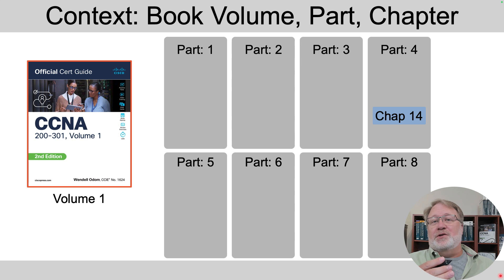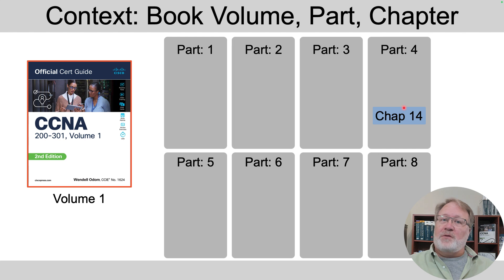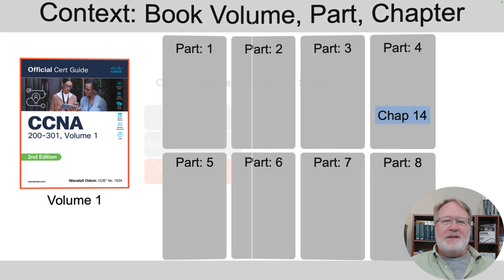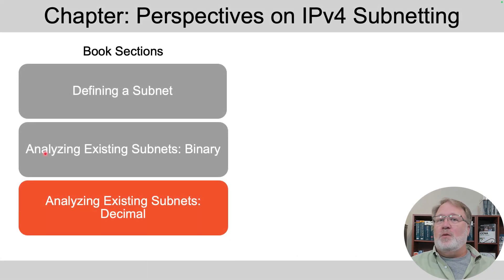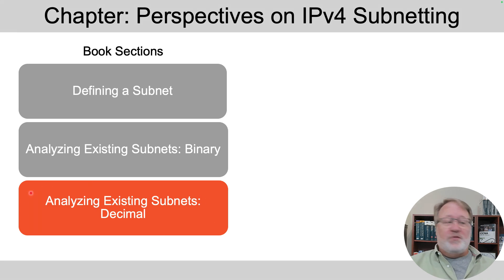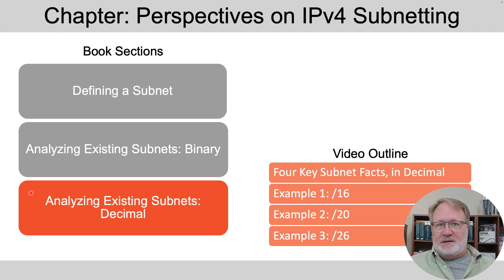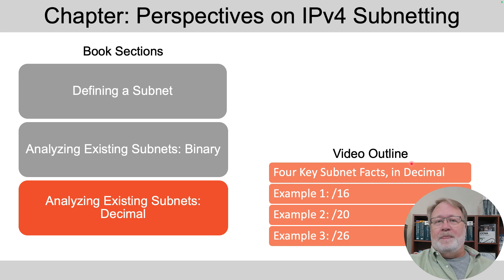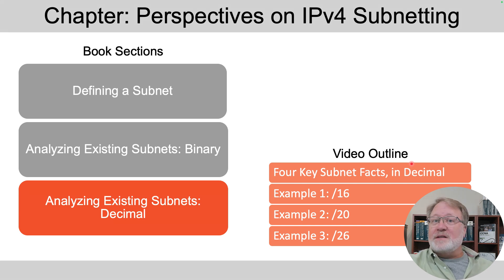So the context. In the two book set, this content matches Volume 1, Part 4, Chapter 14. It's Chapter 14 in both the old Edition 1 and the new Edition 2, as shown there. That chapter has three sections, and this video matches the third major section called Analyzing Existing Subnets, Decimal. In this video, I'm going to start by showing you the process — how to find four key subnet facts using only decimal math with no binary. If you practice using only decimal math, you'll be able to go fast enough for the exam. Then I'll show you three examples and point you at more practice, because you will need to practice.